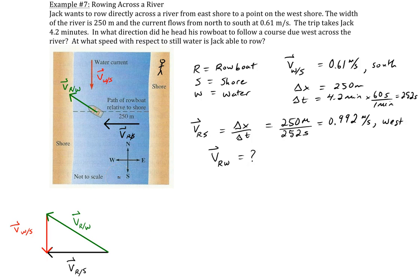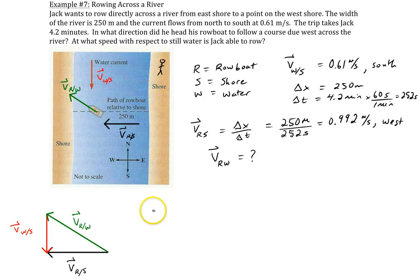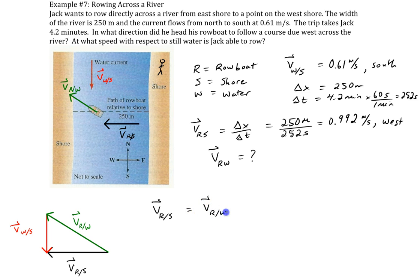Now I'll organize these into a triangle. I've changed the colors a little bit so you can see. There's the rowboat going with respect to the water, the water pushing the rowboat downwards, and the result of adding these two vectors — this is the path the rowboat follows as observed by someone on the shore. We can write the vector equation: the velocity of the rowboat with respect to the shore equals the velocity of the rowboat with respect to the water plus the velocity of the water relative to the shore. Notice it follows the subscript rules — W and W match up, R starts here, S ends there.